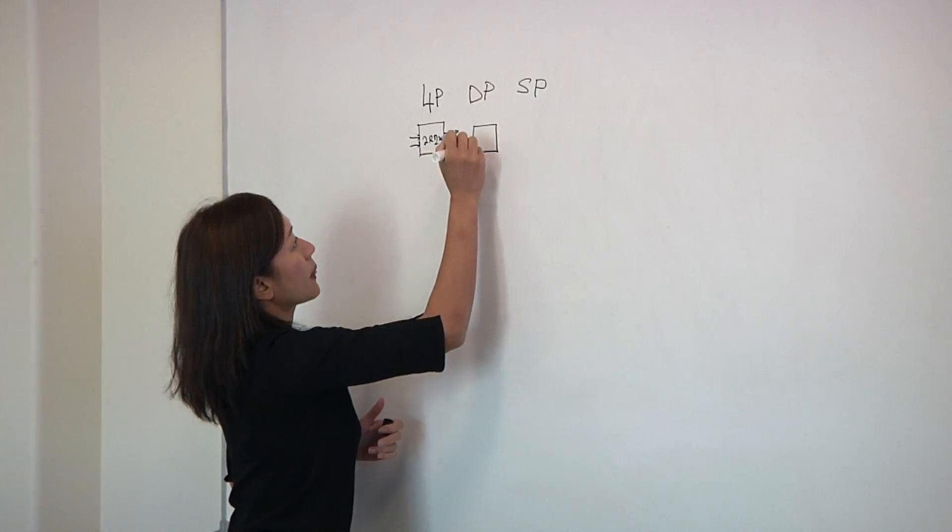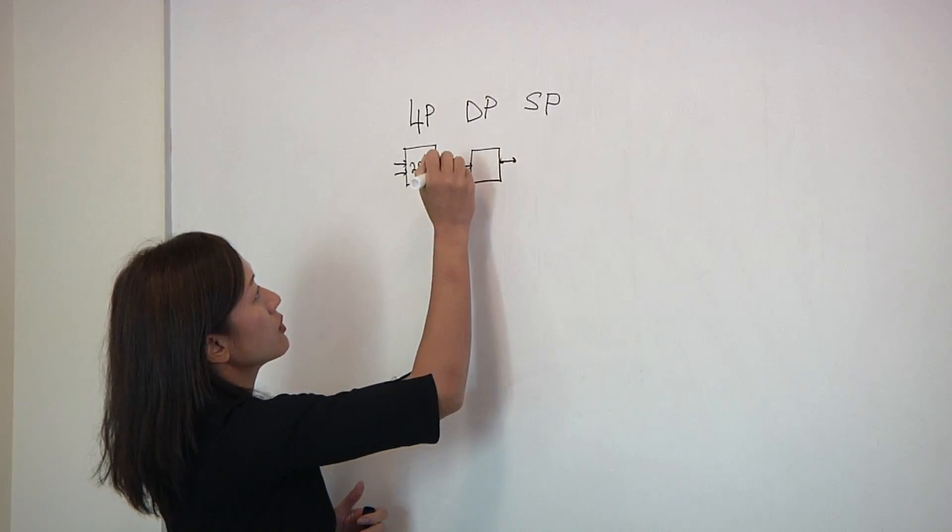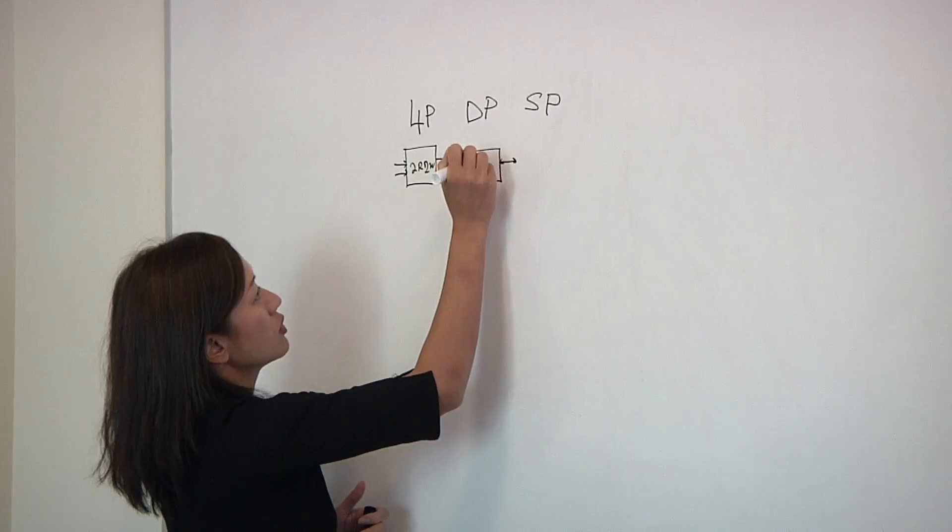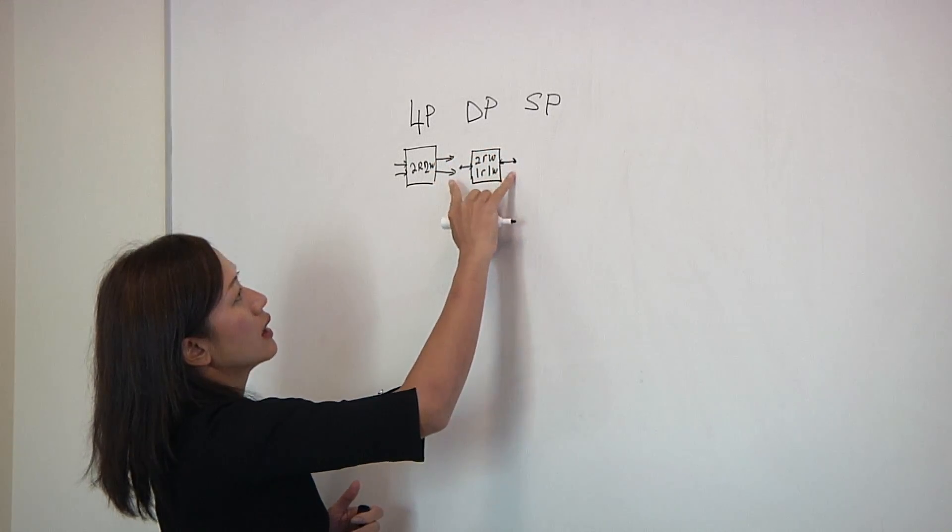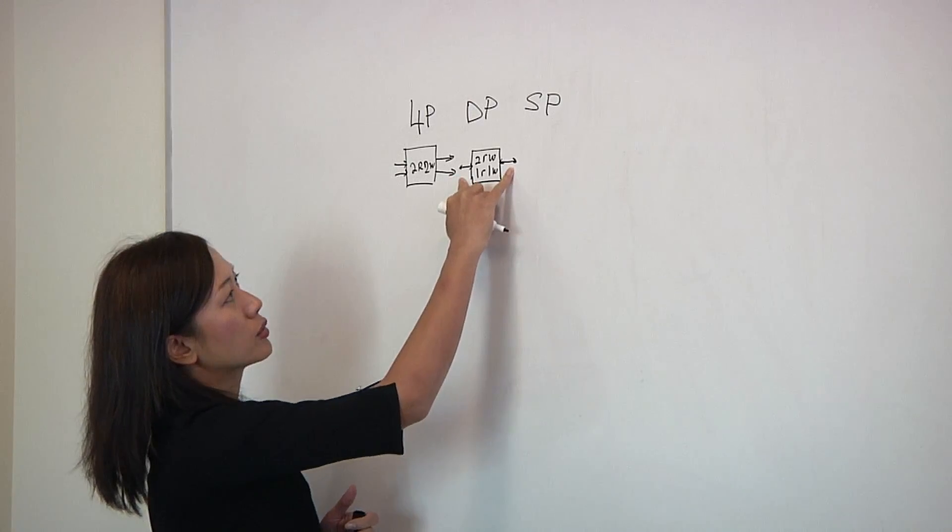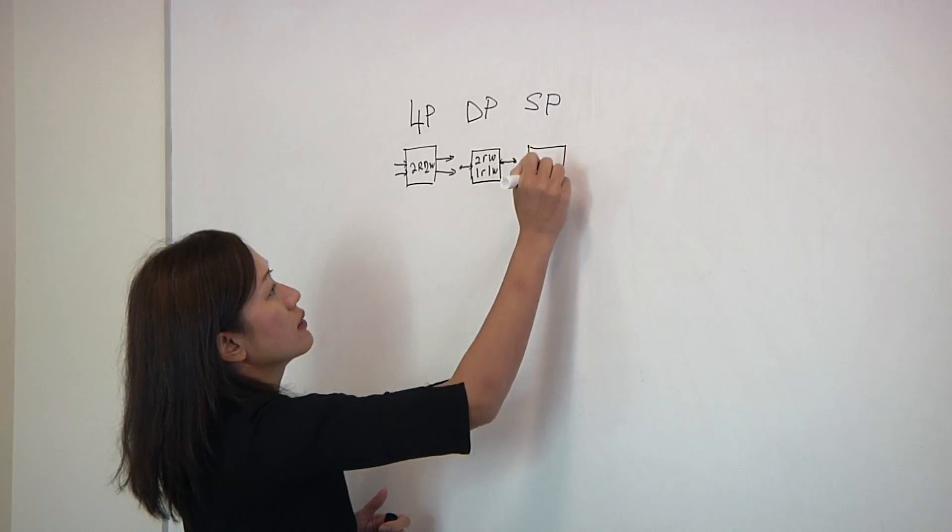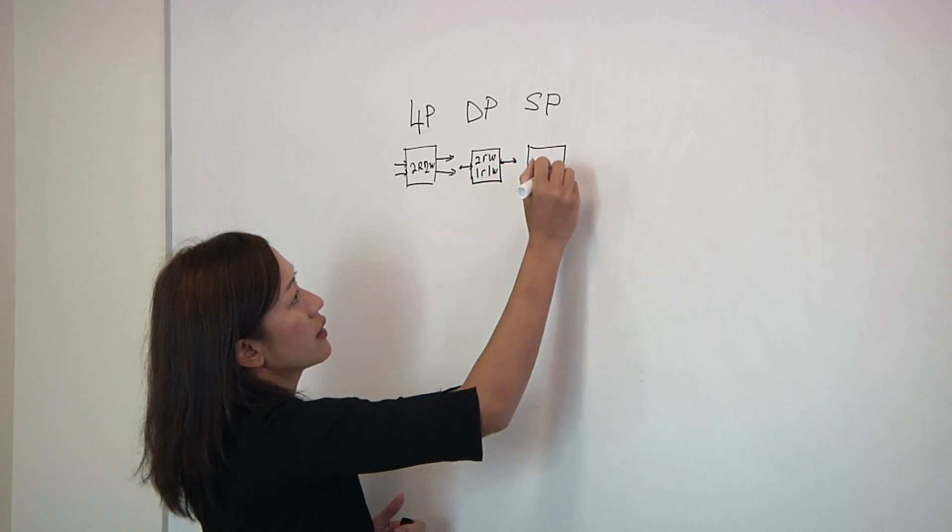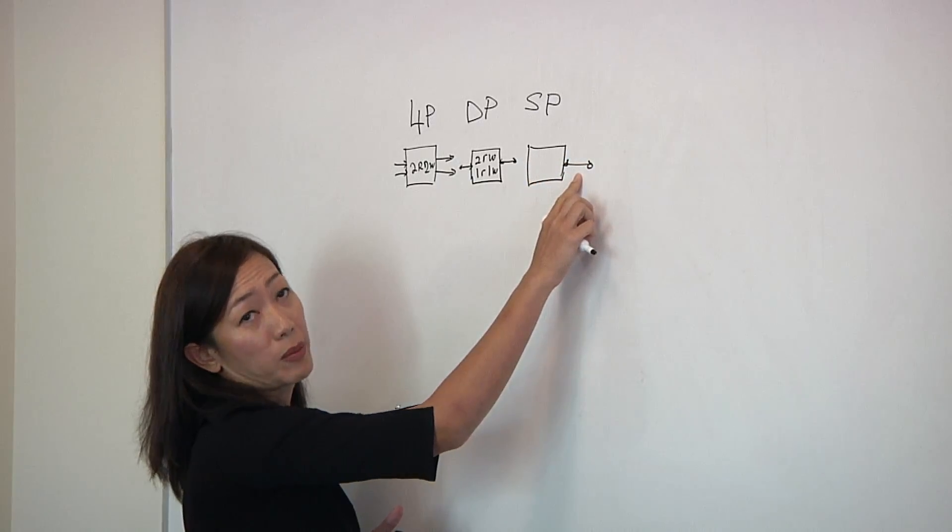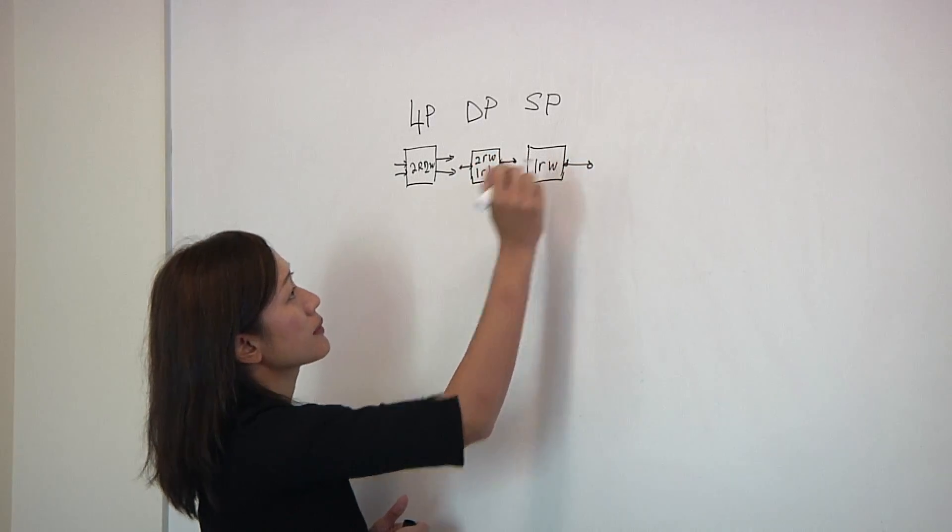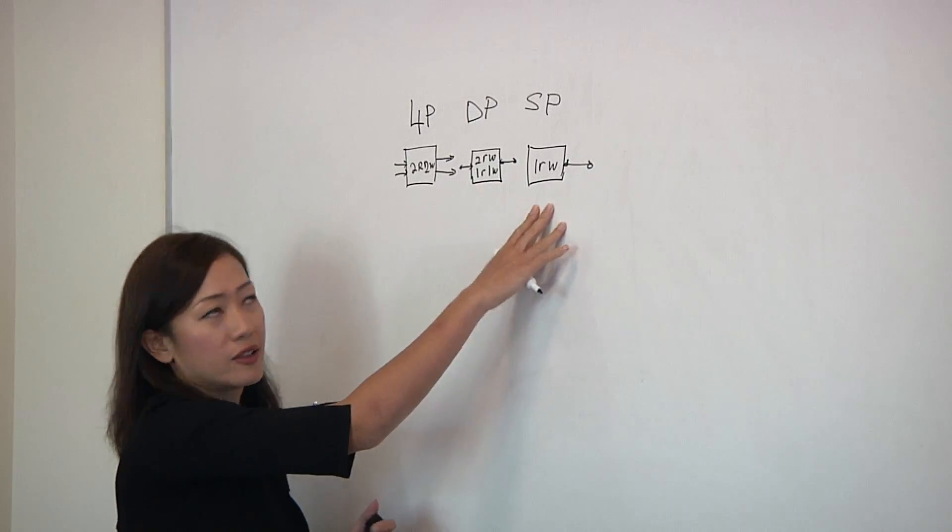A dual-port memory will be able to support typically a two-read-write or one-read, one-write. Two-read-write means the memory can support two reads and two writes simultaneously. For comparison, we have a single-port here where the reads and writes typically come from one port. Now for this example, let's say these memories run at one gigahertz.